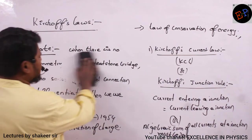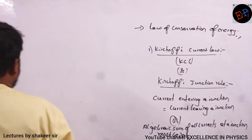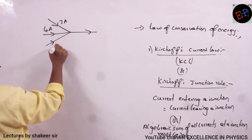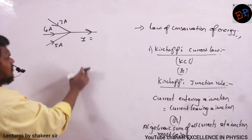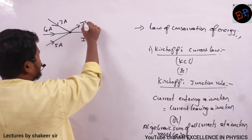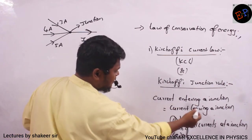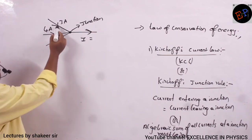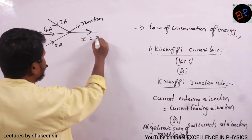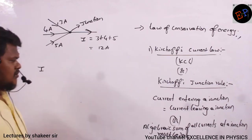Let us understand with a simple example. If 3 amperes, 4 amperes, and 5 amperes of current are entering a junction, then the current leaving must be equal to the total current entering. So I value should be 3 plus 4 plus 5, which is 12 amperes of current leaving the junction. This is according to the first statement of Kirchhoff.